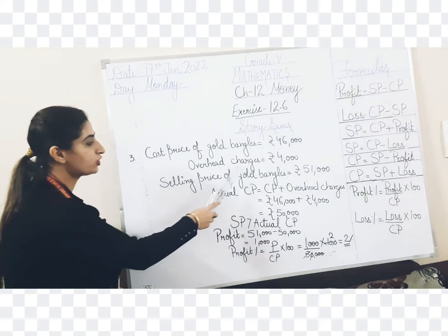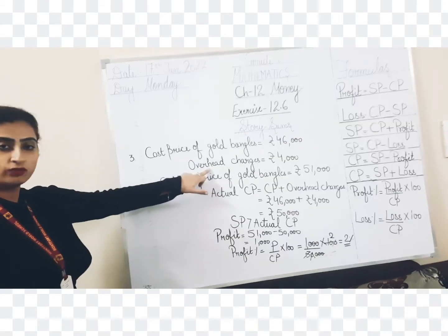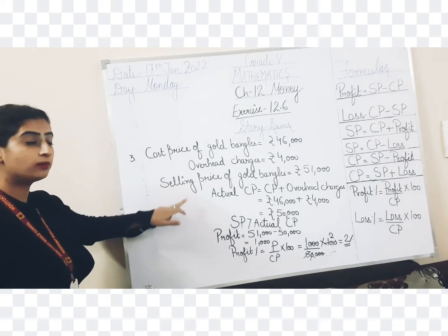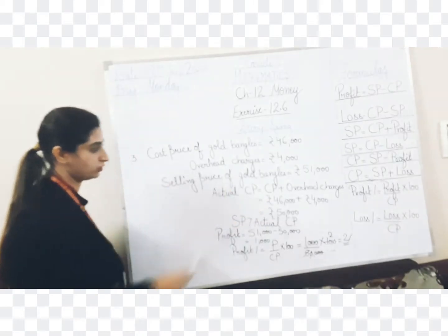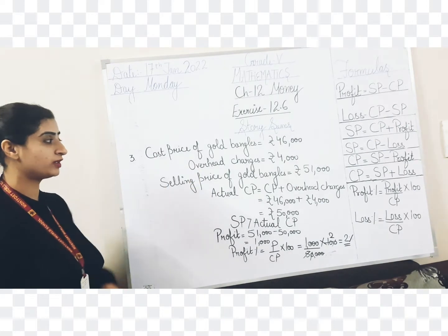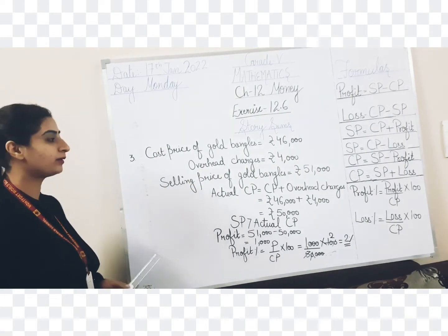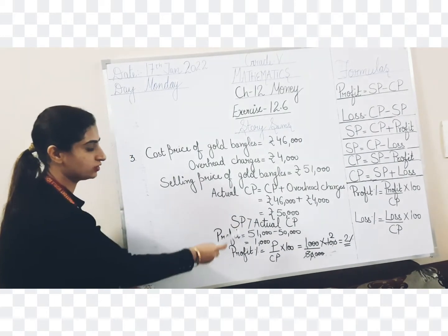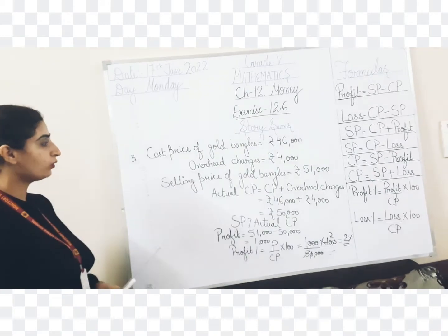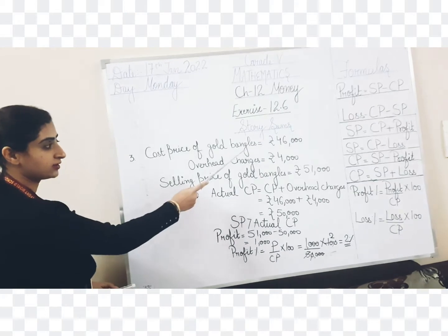Here she also gave polishing charges. Polishing charges means some extra expenses on cost price and that is called as overhead charges. So her overhead charges are rupees 4,000. Overhead charges are additional expenses on cost price. Then she sold the bangles at rupees 51,000. We need to take care - whenever we have overhead charges our cost price changes to actual cost price that becomes the cost price plus overhead charges, that is 46,000 plus 4,000 equals 50,000. So the actual cost price of gold bangles is 50,000 not 46,000.